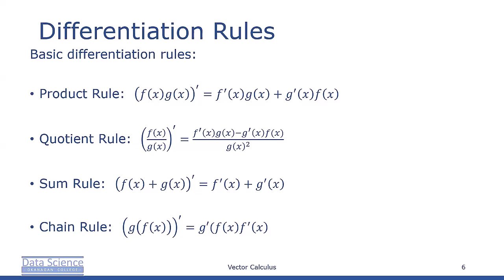The quotient rule. The derivative of f over g is equal to f' times g, minus g' times f, divided by g squared.